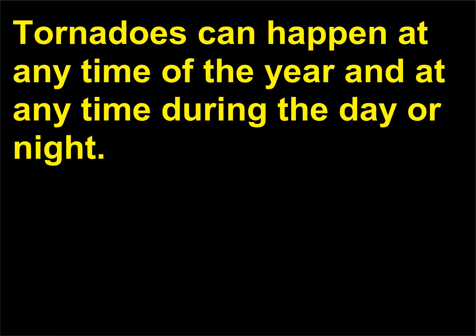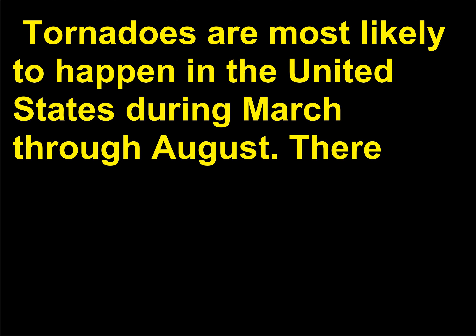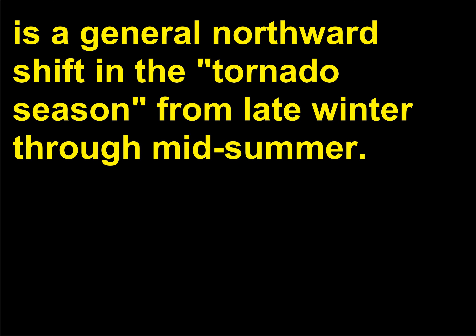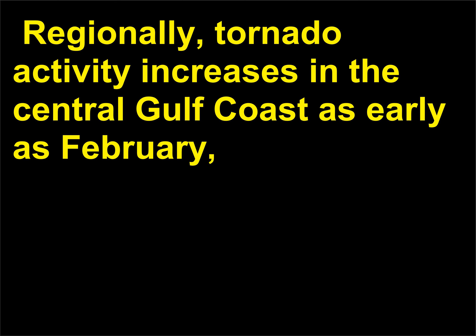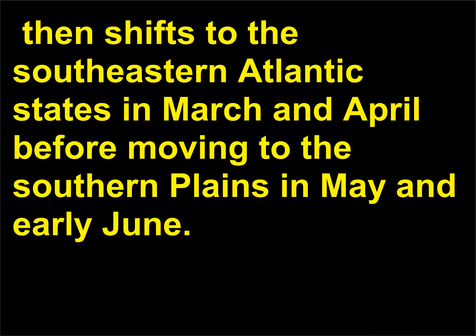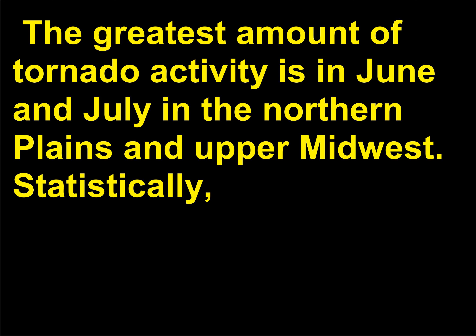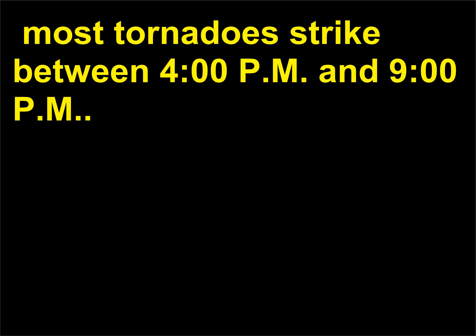Tornadoes can happen at any time of the year and at any time during the day or night, but are most likely in the United States during March through August. There is a general northward shift in the tornado season from late winter through mid-summer. Tornado activity increases in the central Gulf Coast as early as February, then shifts to the southeastern Atlantic states in March and April before moving to the southern plains in May and early June. The greatest activity is in June and July in the northern plains and upper Midwest. Statistically, most tornadoes strike between 4 PM and 9 PM.